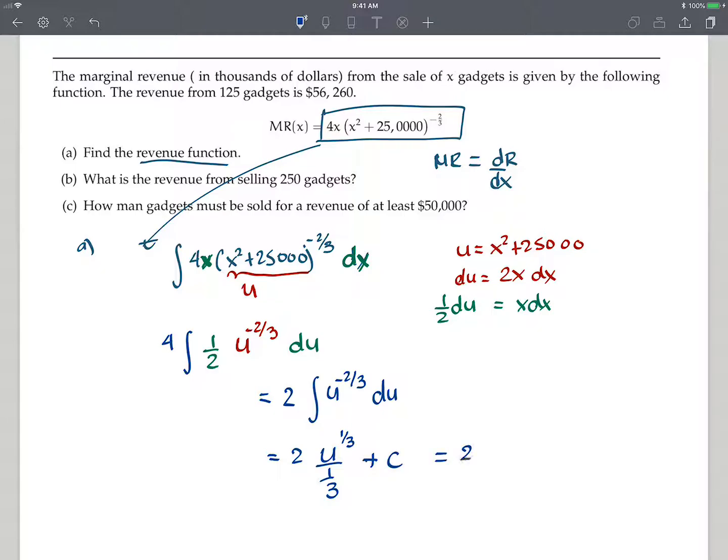So this becomes two times three over one u to the 1/3 plus c. So really this is just six times u to the 1/3 plus c. We're there. We're almost there. I'm not done finding the revenue function yet. I have a couple of things to do. I need to go back to say who is u. So instead of u here, I need to put back my x squared plus 25,000. And I need to find out who the c is. Right?